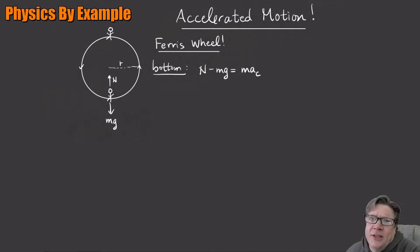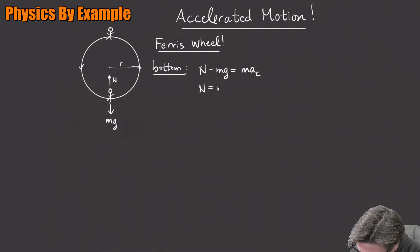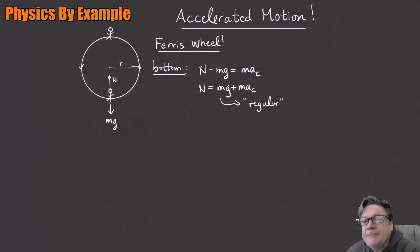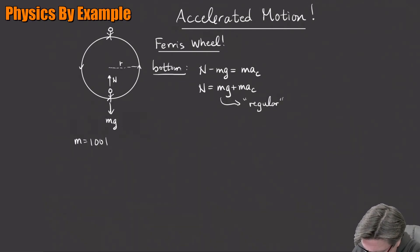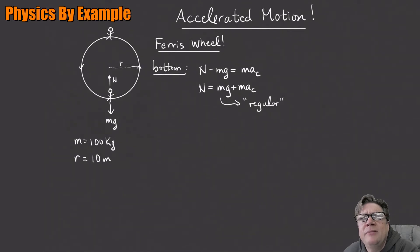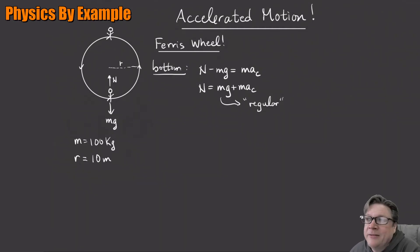Never put centripetal stuff on the left-hand side — it's not a force to be summed. So we get N = mg + mac. Our regular weight mg is what a normal scale would read, and at the bottom of the ride we're adding this centripetal acceleration term to our regular weight, so you would weigh more. Let's use a standard person of 100 kg, and let's say r is 10 meters — a 20-meter-high ride, about 66 feet, which is a pretty big ferris wheel.